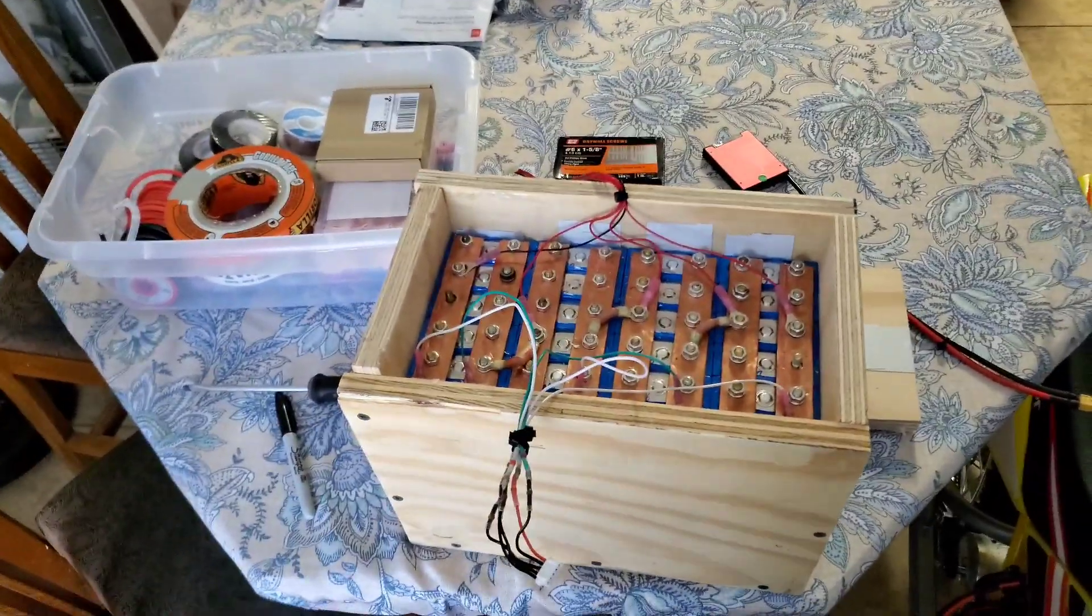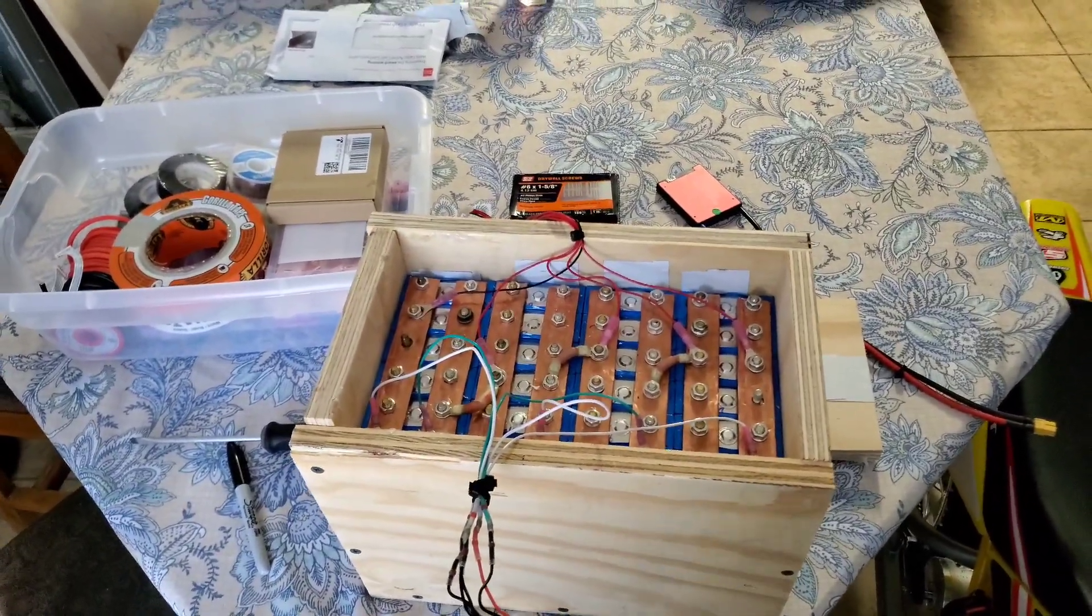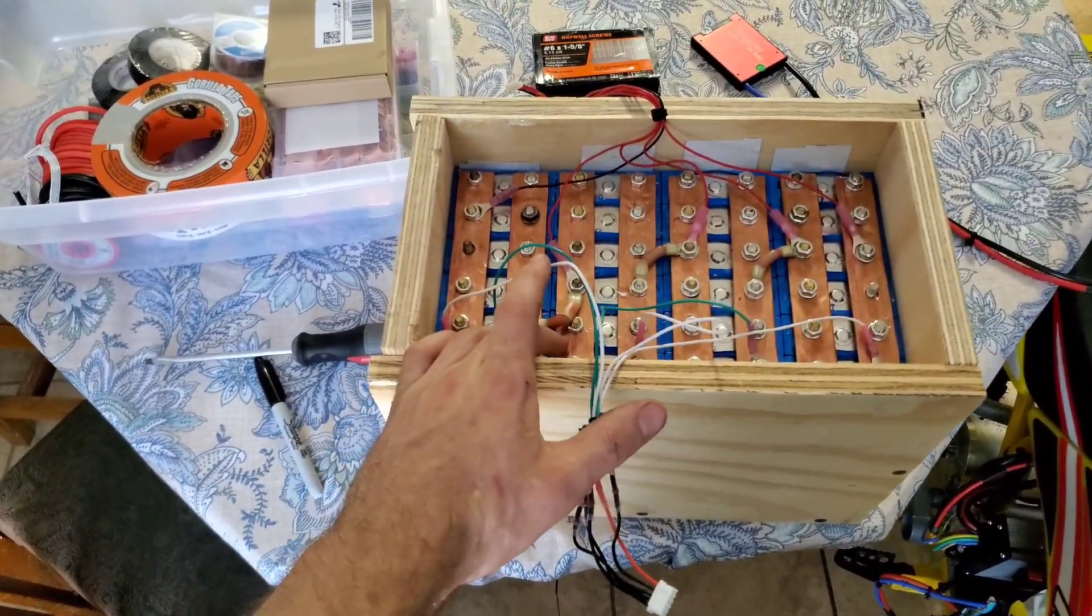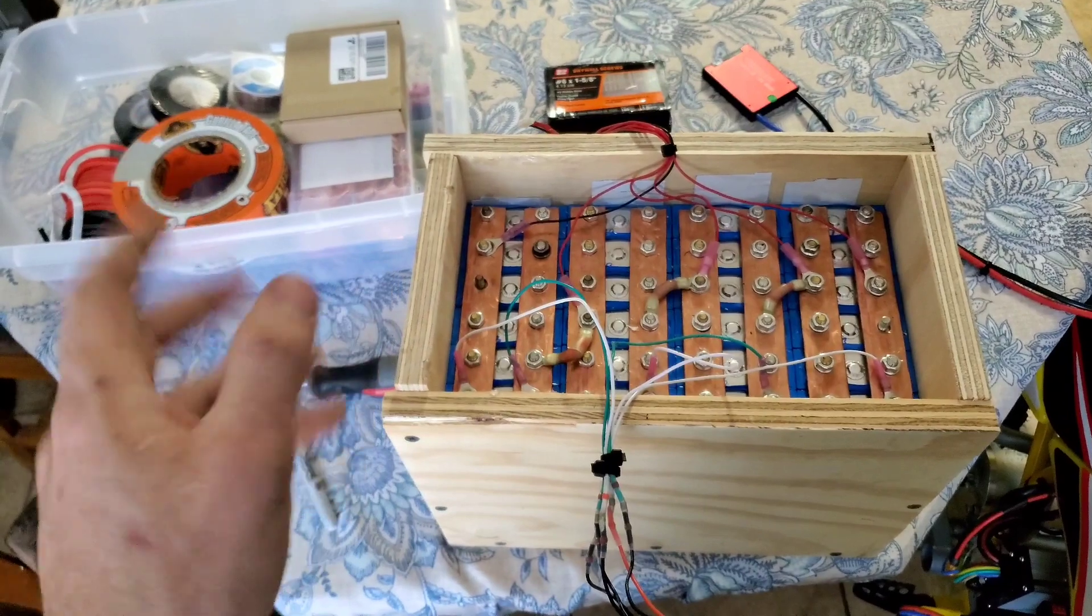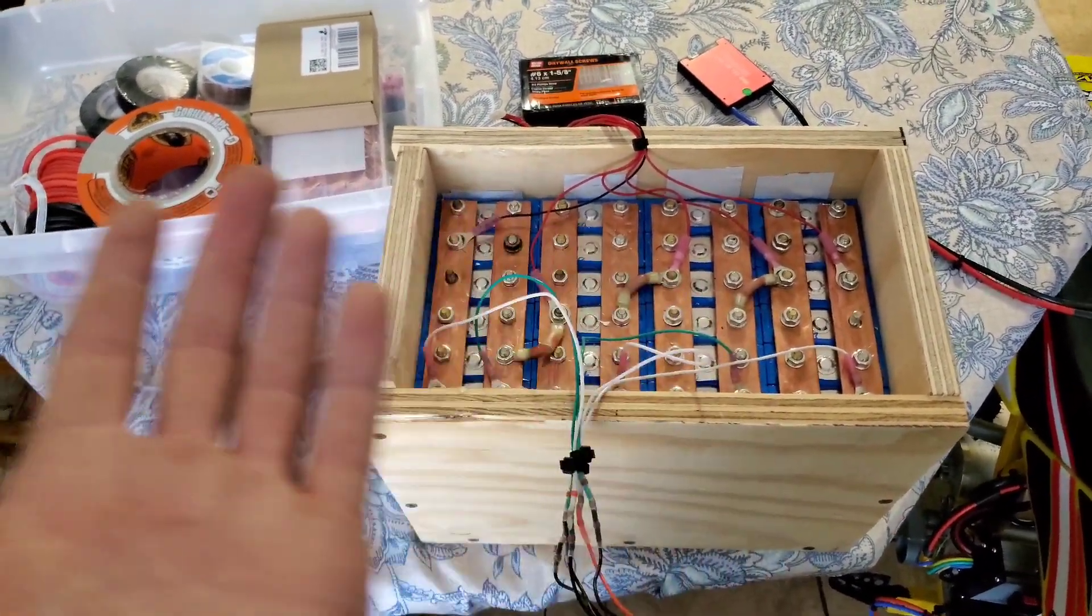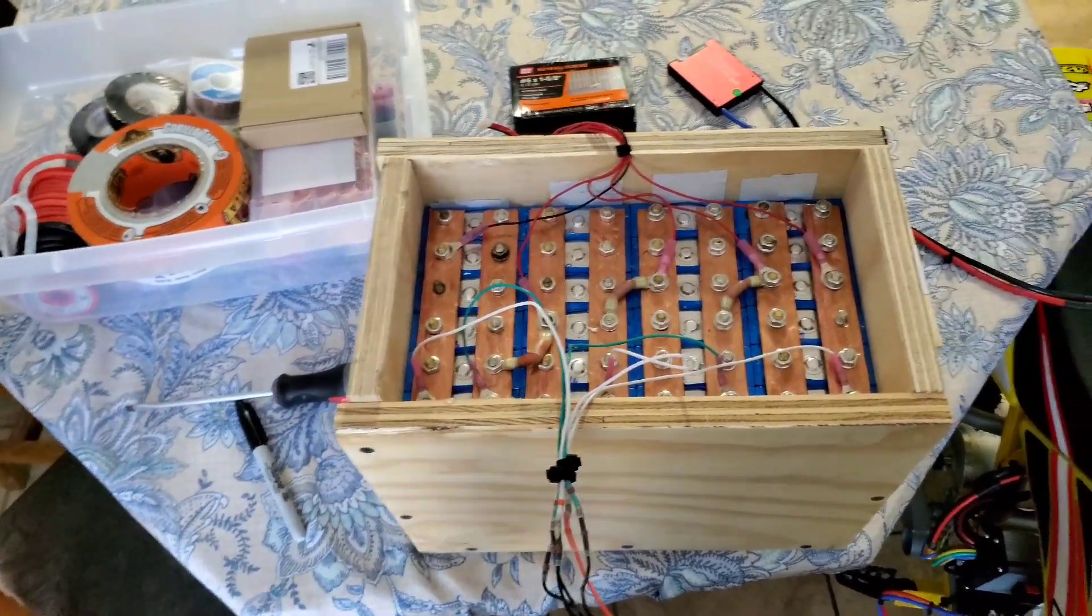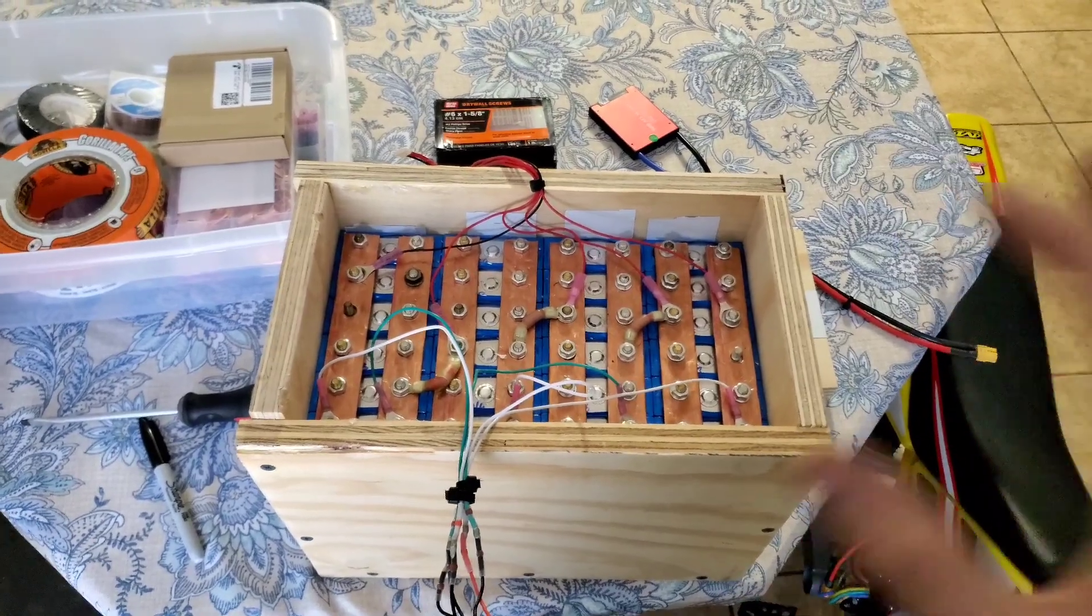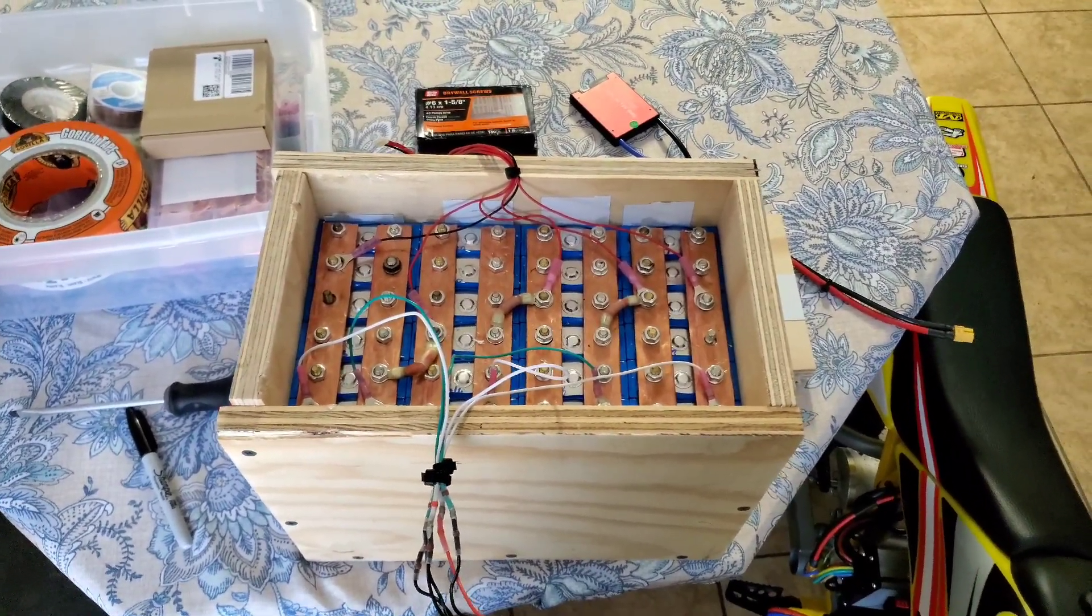Lithium iron phosphate, 2.5 is dead, 3.65 is full. But even if you charge these to 3.65 volts, they will naturally settle back down to about 3.5 to 3.4, and that's it. It'll stay there until it discharges completely and then it just falls off. So we're going to get these all top balanced, and then we're going to get the BMS mounted. And once I get all that, I'll show you guys what it looks like.